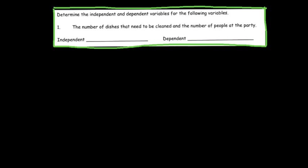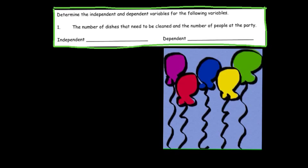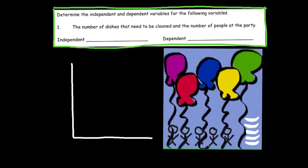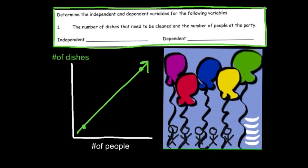The number of dishes that need to be cleaned and the number of people at a party: if I'm throwing a party and nobody comes, I don't have many dishes. But the more people that attend my party, the more dishes I have to clean. Therefore, the number of dishes is dependent on the number of people that attend. The independent variable is the number of people at my party, and the dependent variable is the number of dishes I have to clean. As the number of people increases, the number of dishes also increases.